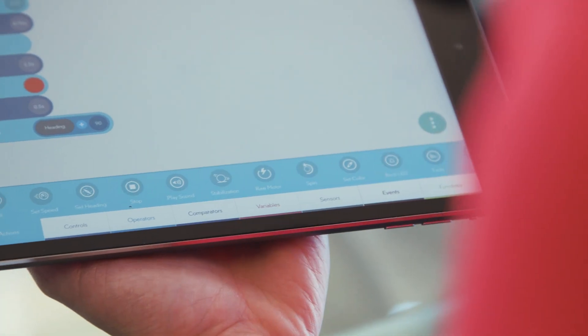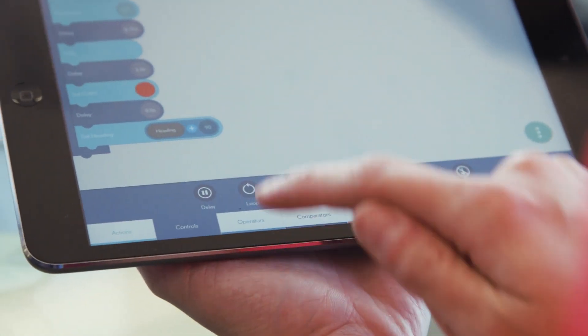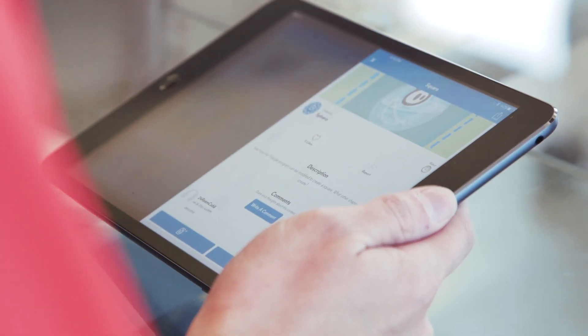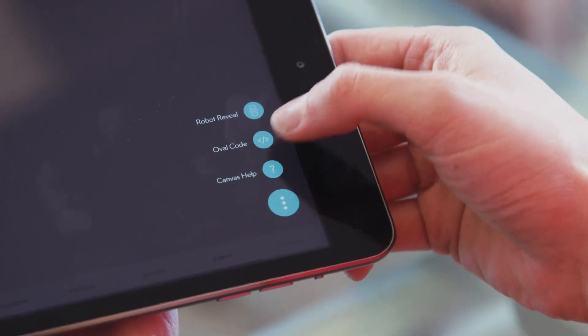Lightning Lab, that lets you do drag and drop coding and you can also peek inside those little modules and see what the actual code looks like behind it.